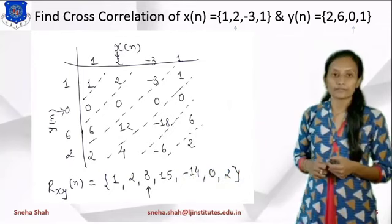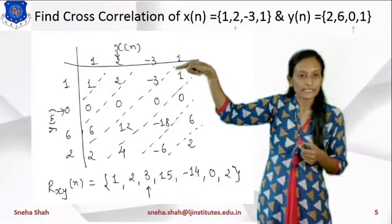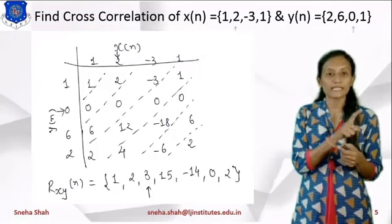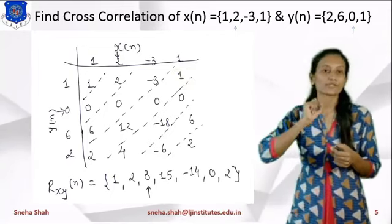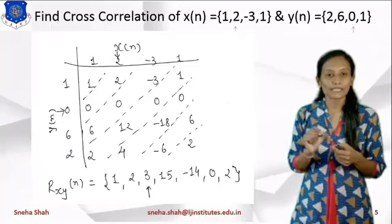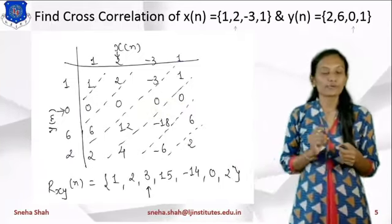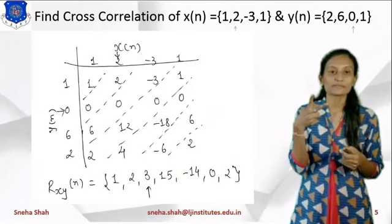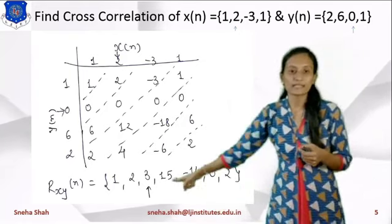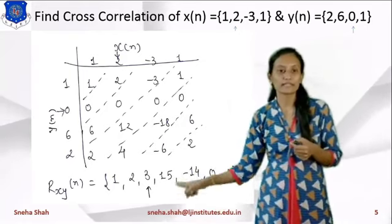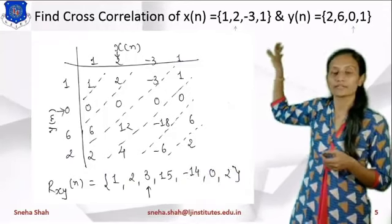Now where do we place the arrow? The range for x(n) is -1 to 2 because the arrow is below the second term, and for y(n) also the range is -1 to 2. So the overall starting point is -1 + (-1) = -2. The answer starts from n = -2, so n = -2, -1, and the third term is at n = 0. This is the final answer for the cross-correlation of this example.